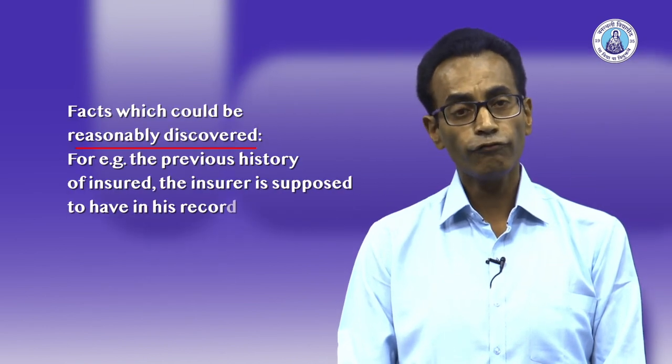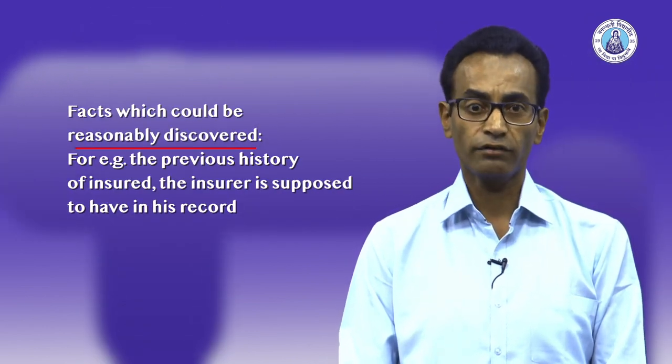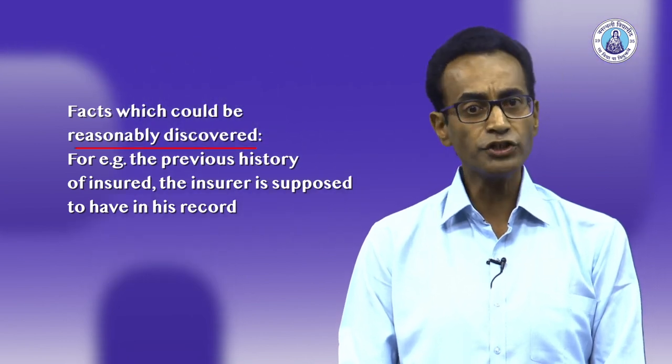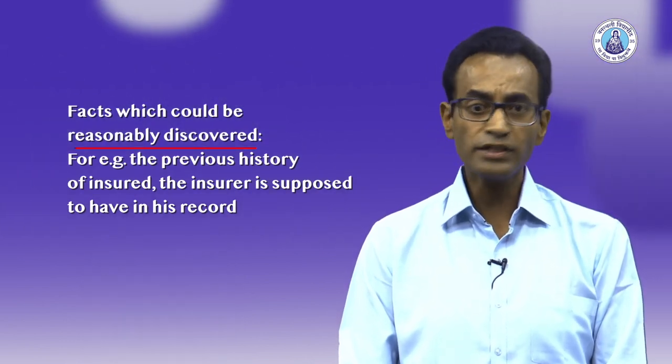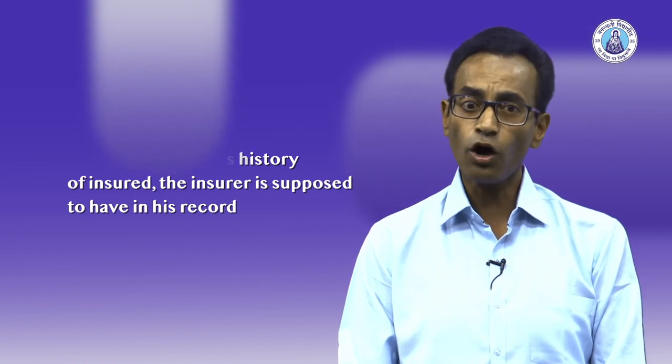Further, facts which could be reasonably discovered — for example, the previous history of the insured, which the insurer is supposed to have in his records. Moreover, facts which the insurer's representative fails to notice: in case the surveyor of an insurer fails to notice hazardous features and reports details that are not withheld or concealed by the insured, then the insurer cannot be penalized.